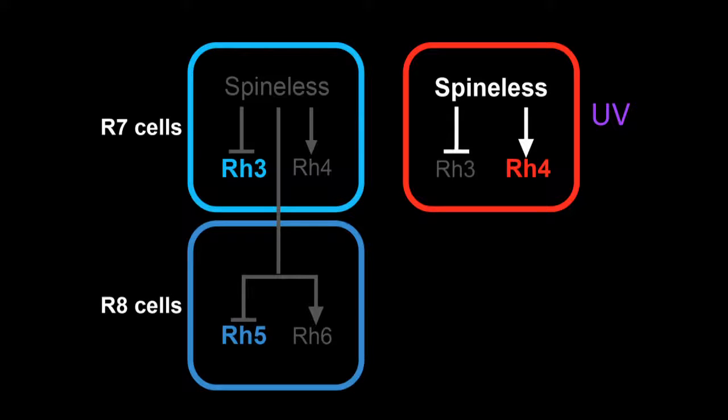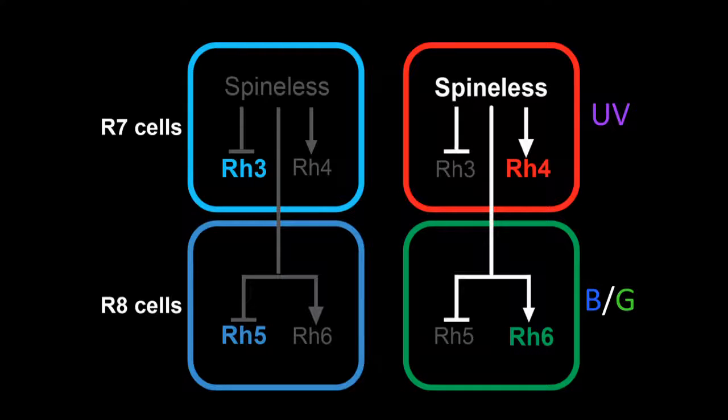In R7 cells that do not express spineless, the neighboring R8 cell expresses blue-detecting rhodopsin 5. In the R7 cells that do express spineless, we get activation of the green-detecting rhodopsin 6 in the neighboring R8.